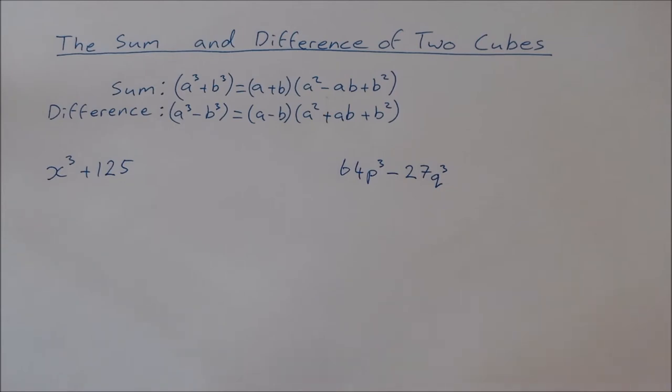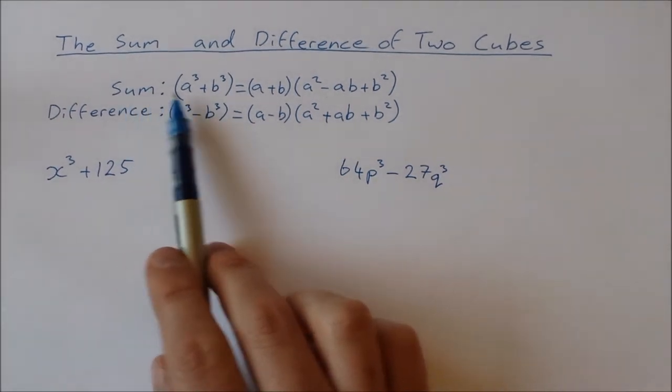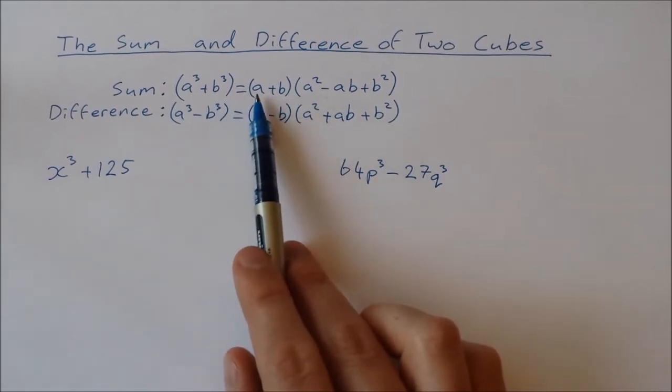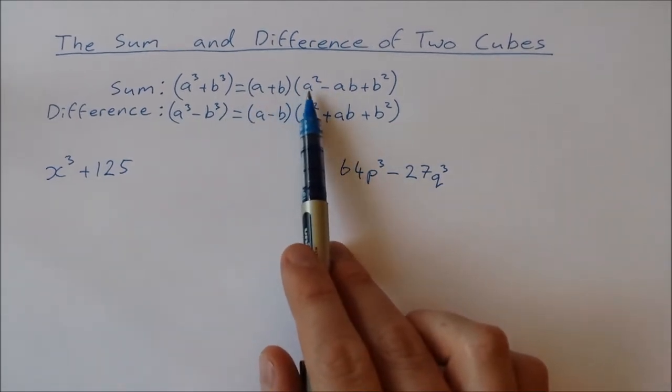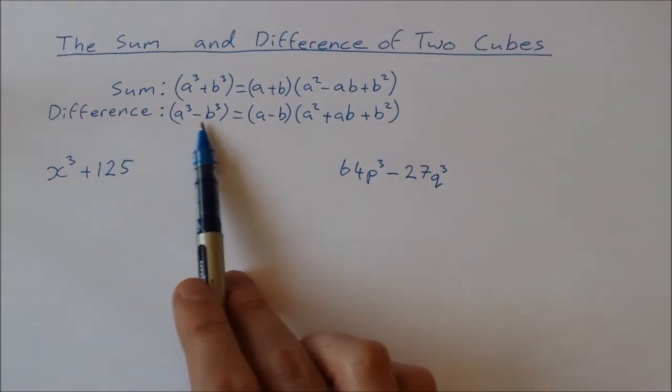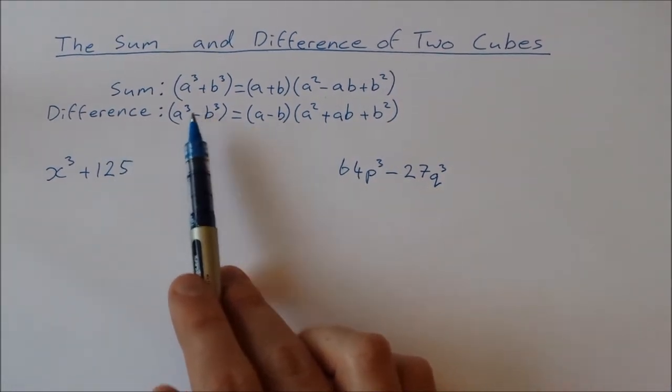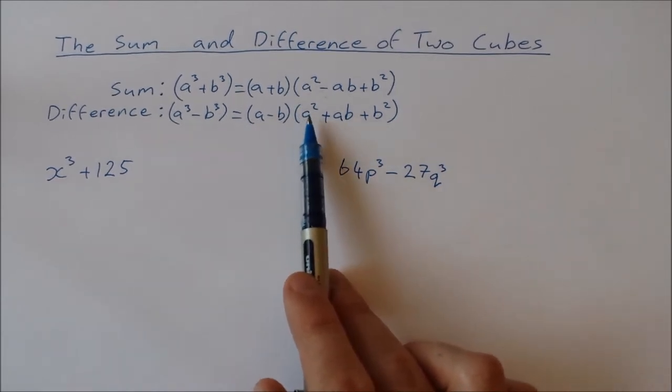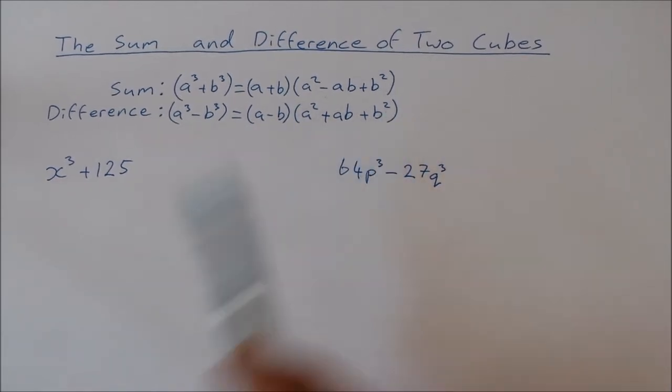Now the two formulas for these, they look very similar. Here they are here. So this is the sum of two cubes: a cubed plus b cubed is equal to a plus b times a squared minus ab plus b squared. The difference looks very similar except now it's minus and we have a minus b times a squared plus ab plus b squared.